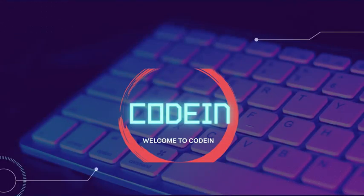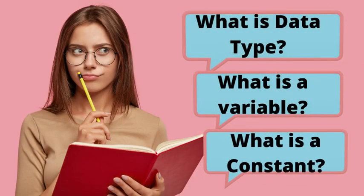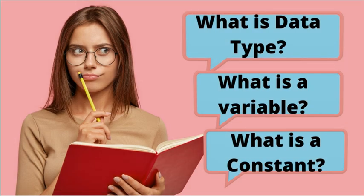Hello guys, welcome back to Coding. Continuing with the series on C, we are going to discuss what are the different kinds of data types, what do we mean by variables, and what do we mean by constants. We'll also clarify why we use %d or %f, what is the basic purpose of a data type, and what is the difference between a variable and a constant.